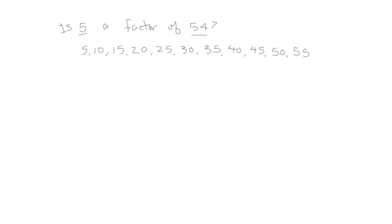So 5 isn't a factor of 54. I also notice that when I'm counting by 5s, each number in the ones place has either a 0 or 5. So that's an easy way right away to determine if 5 is a factor of a number — if the number doesn't end in a 0 or 5, then 5 isn't a factor.